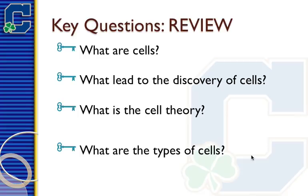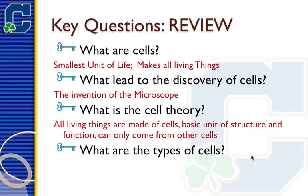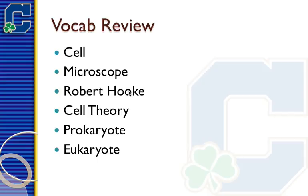Quick review: cells are the smallest unit of life and make all living things. Robert Hooke and Anton van Leeuwenhoek were the first two to see cells, and Hooke coined the phrase 'cells.' They needed that early microscope to actually discover cells. Cell theory has three parts: all living things are made of cells, cells are the basic unit of structure and function, and cells can only come from other cells. The two types of cells are prokaryotes — 3.5 billion years old — and eukaryotes — 1.5 billion years old. Key vocabulary includes cell, microscope, cell theory, prokaryote, and eukaryote, along with all the scientists covered.